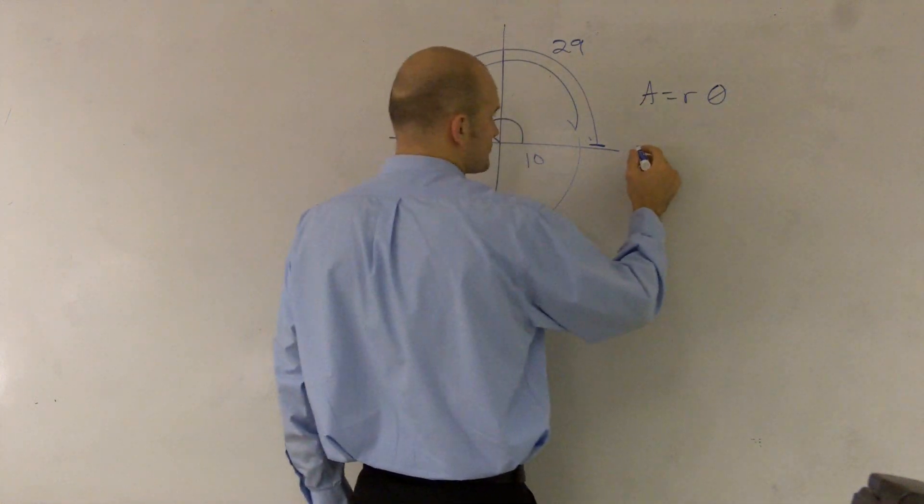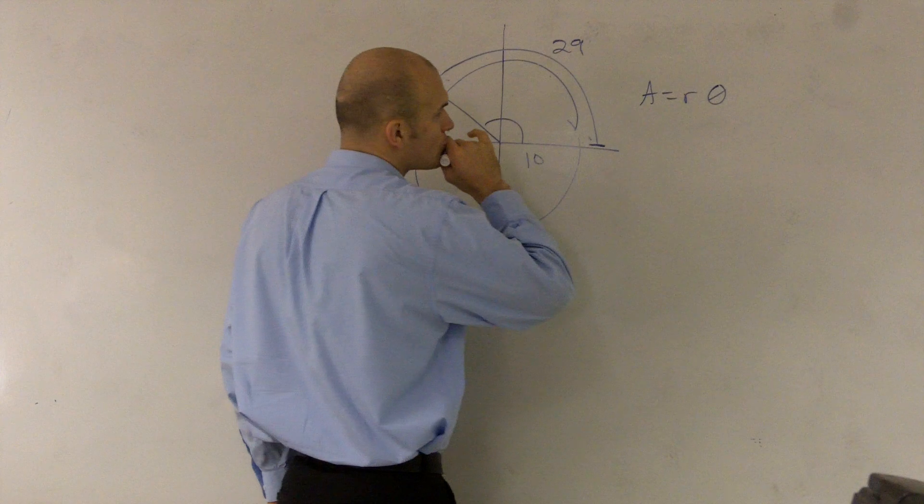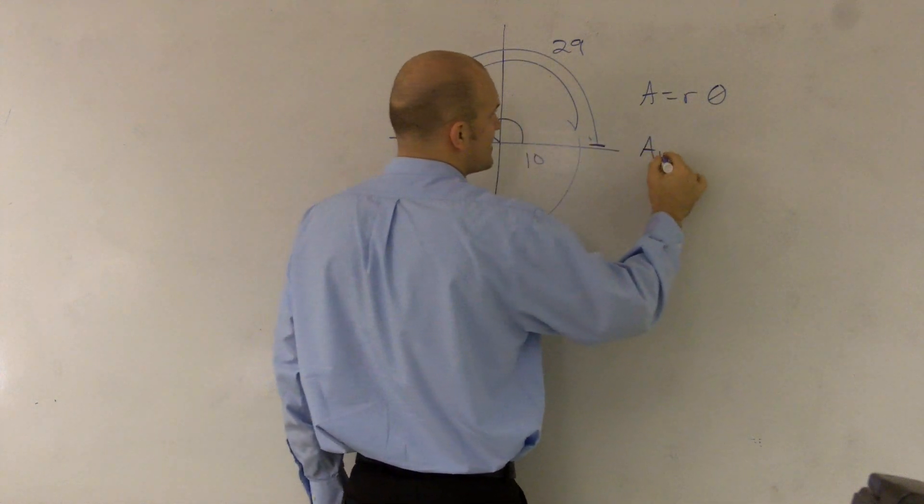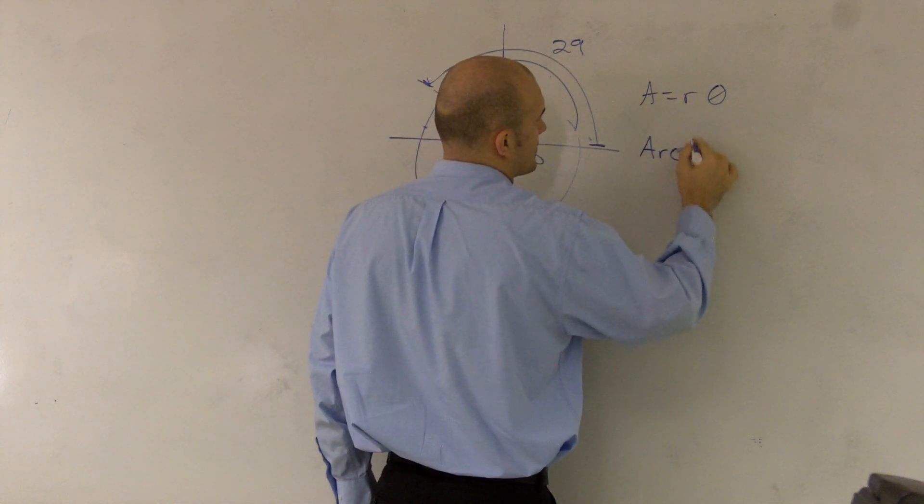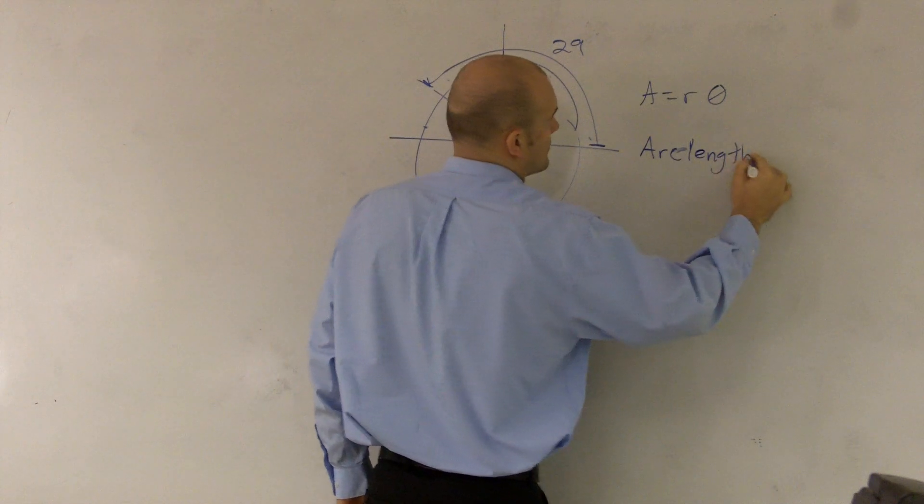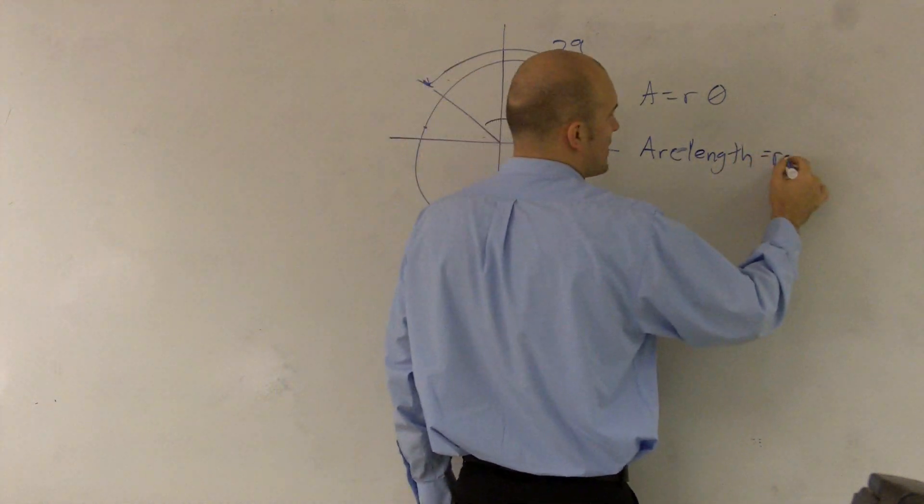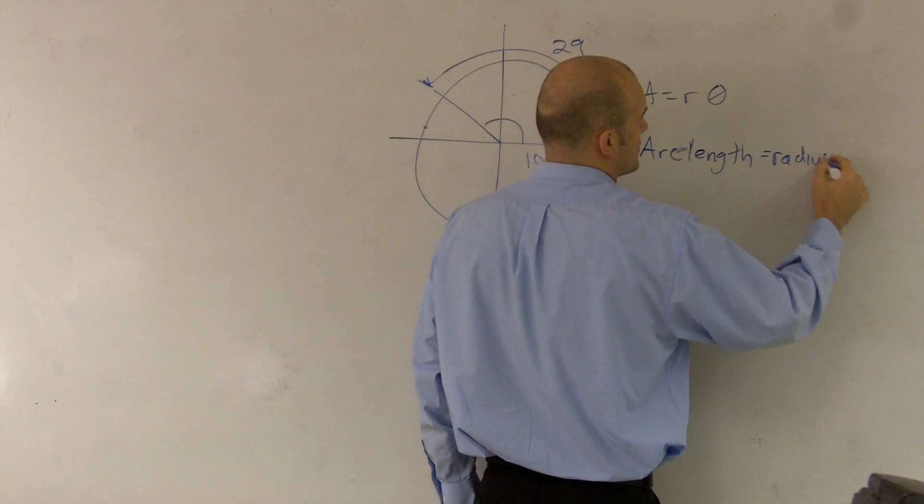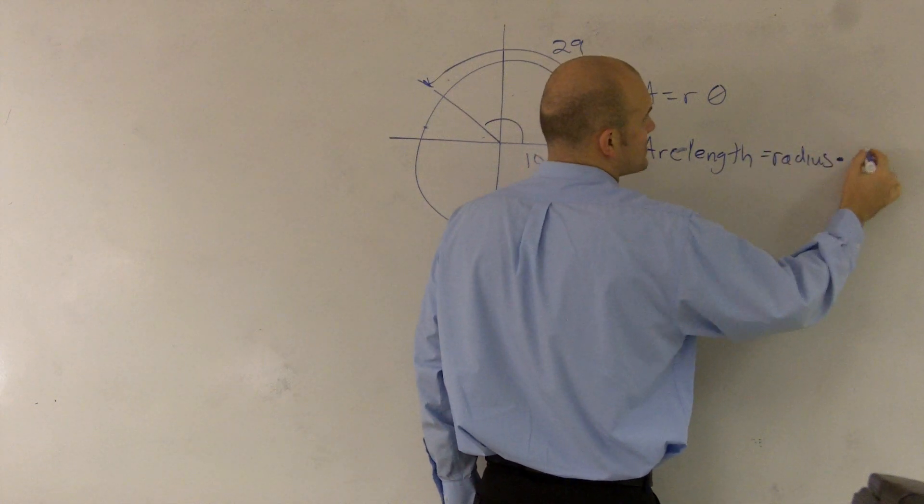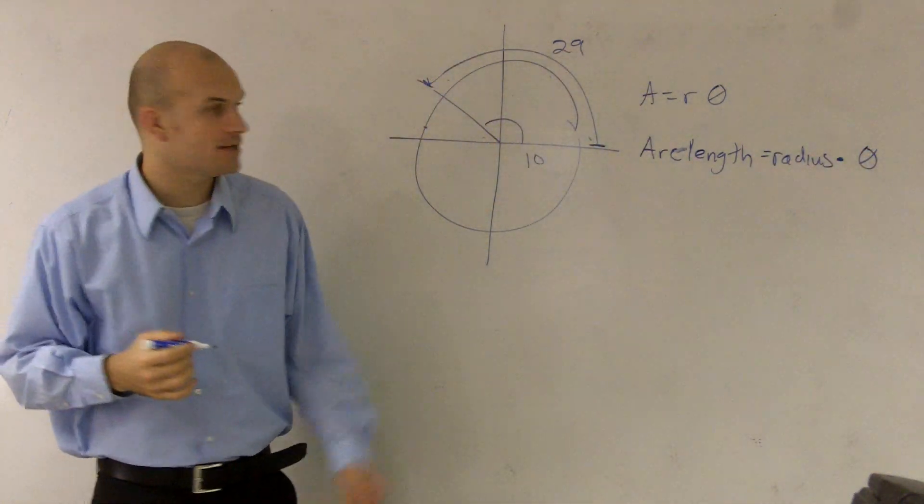So what it says is, the arc length is equal to your radius times your angle, which we'll just call as theta.